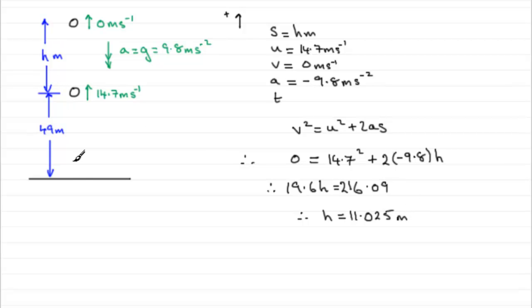Well that's h but we want the greatest height above the ground. So to finish off, for greatest height above ground equals, we just got to do 49 plus 11.025 and what does that give us? Well that gives us 60.025 metres and if we round it to 3 significant figures that's going to be 60.0 metres to 3sf.